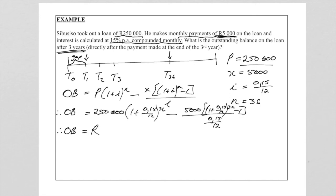And your final outstanding balance amount will be 165,408 rand and 43 cents.